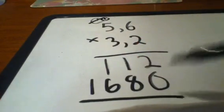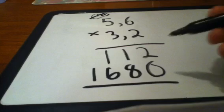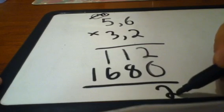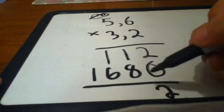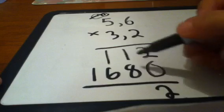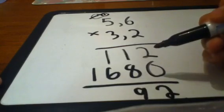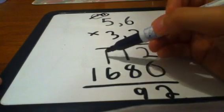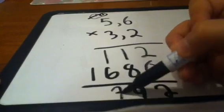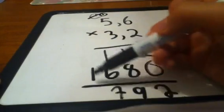You add, then you've got to do the addition. 2 plus 0, 2. 8 plus 1, 9. 1 plus 6, 7. And 1 plus 0, 1.